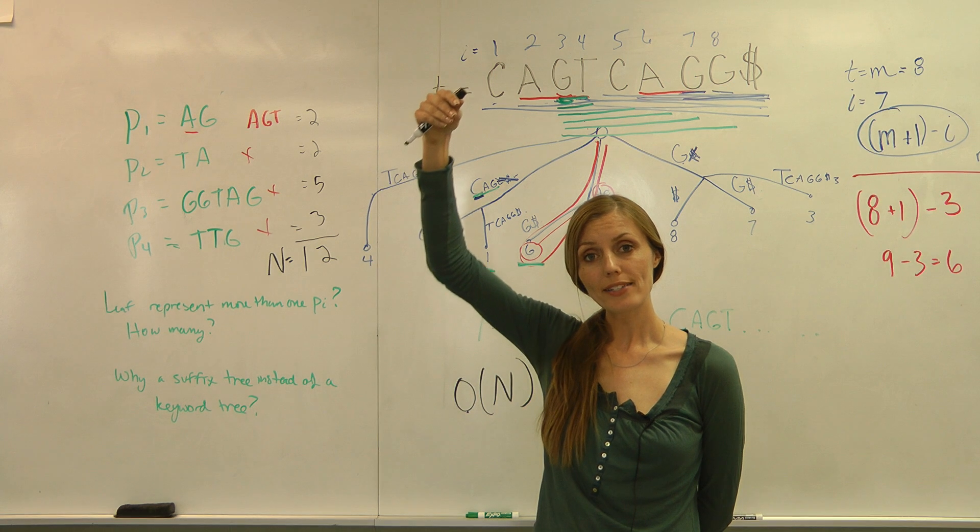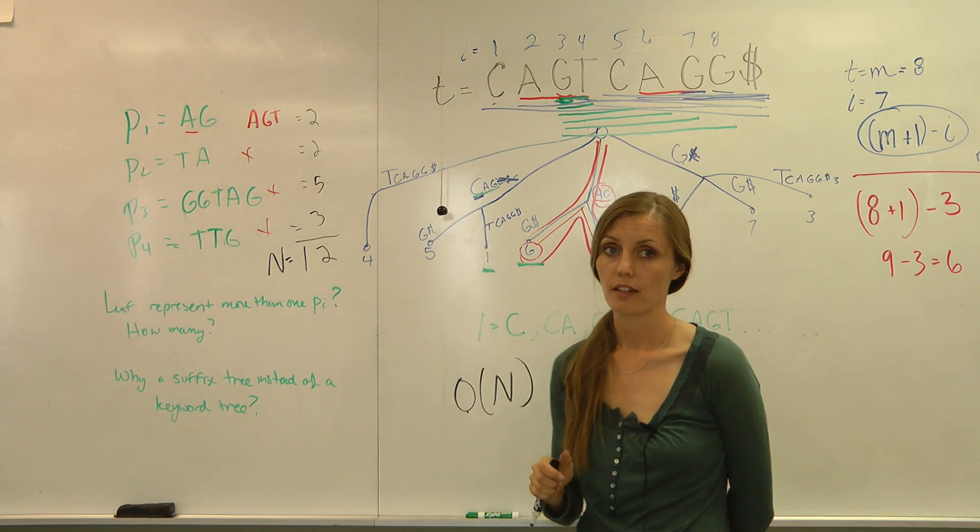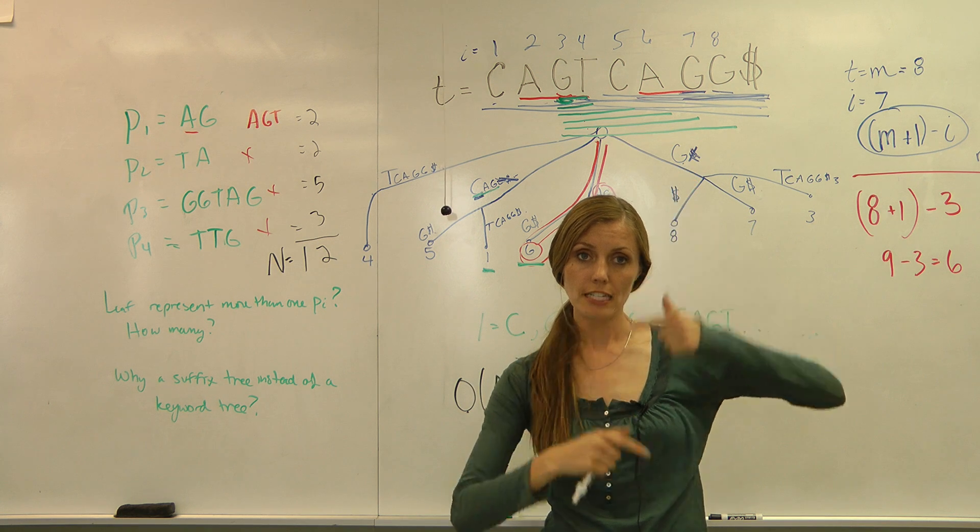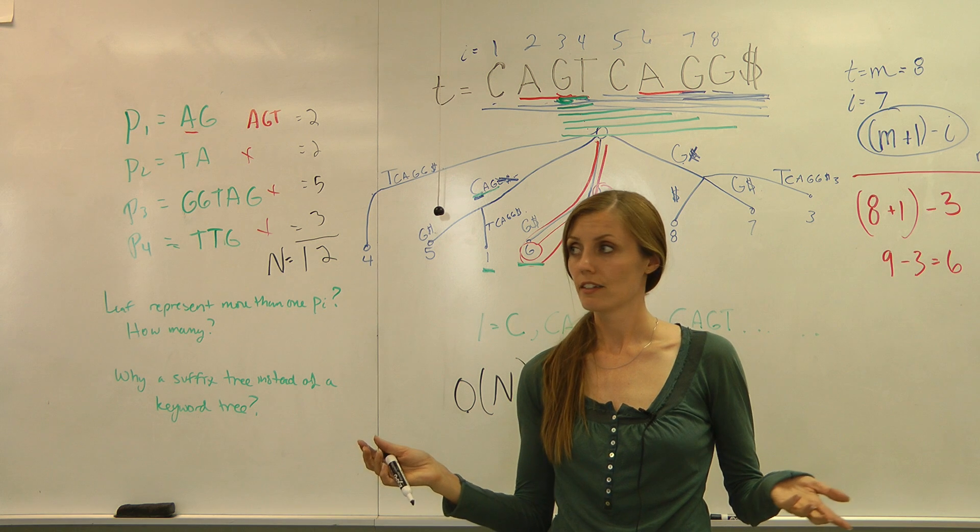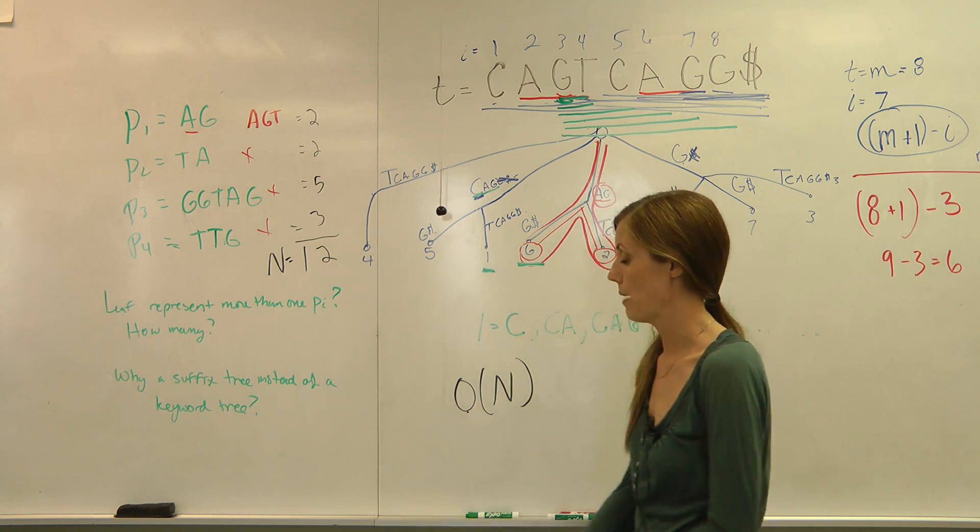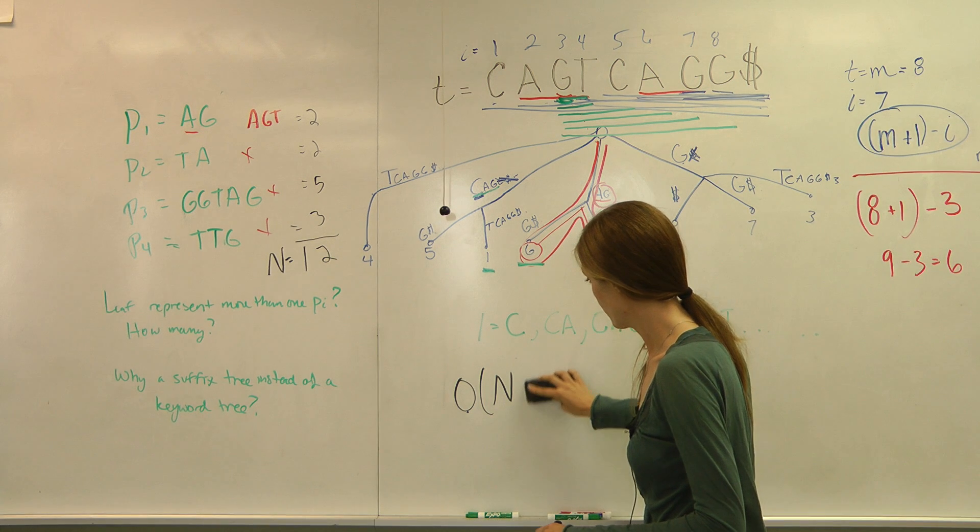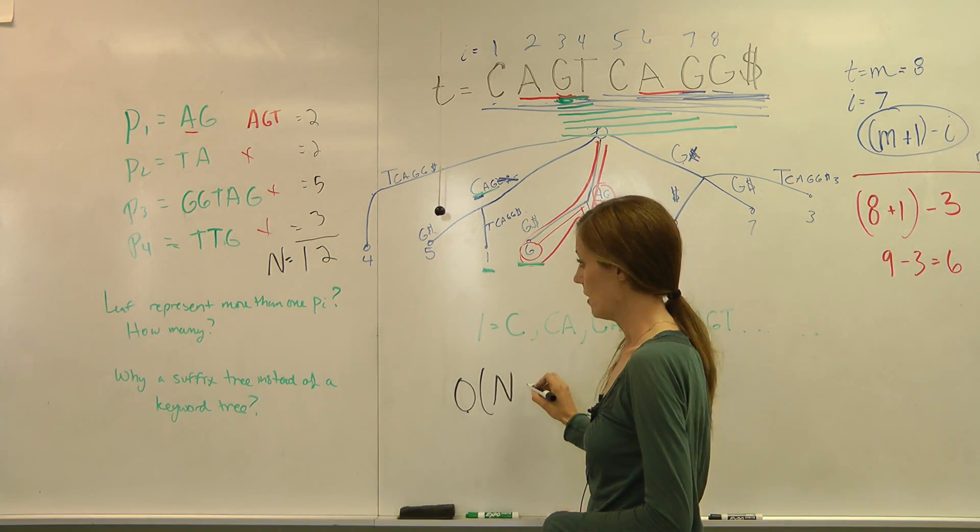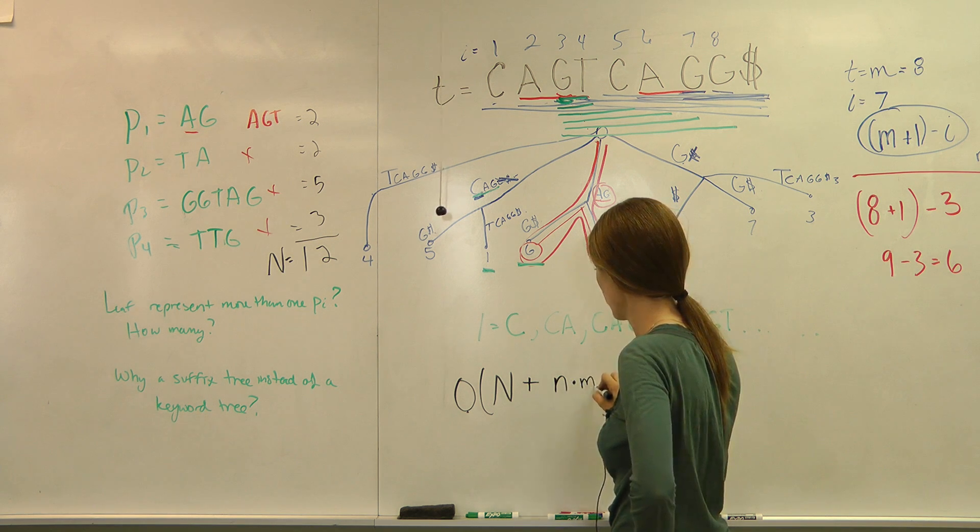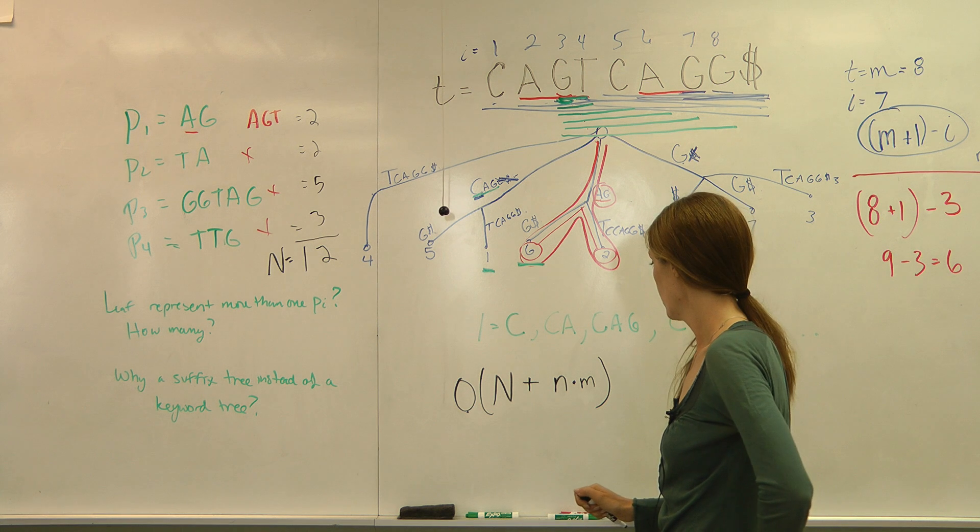And then to search the keyword tree, you have to pass the pattern, I mean the text, through your keyword tree to see if you find it. So if the pattern is at the end of your text, then you've had to check every single branch, basically, until you finally met that pattern within your text. So to search for a pattern within the text, you run your text through the keyword tree, and that's going to take N times M. M being the length of your text, and N being the length of the keyword.